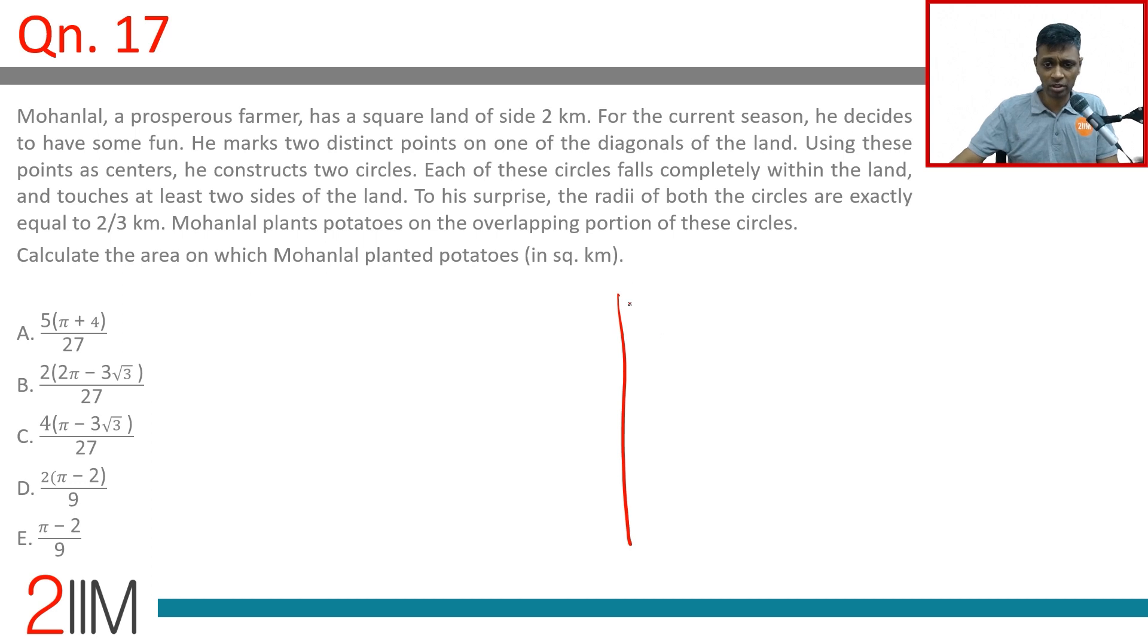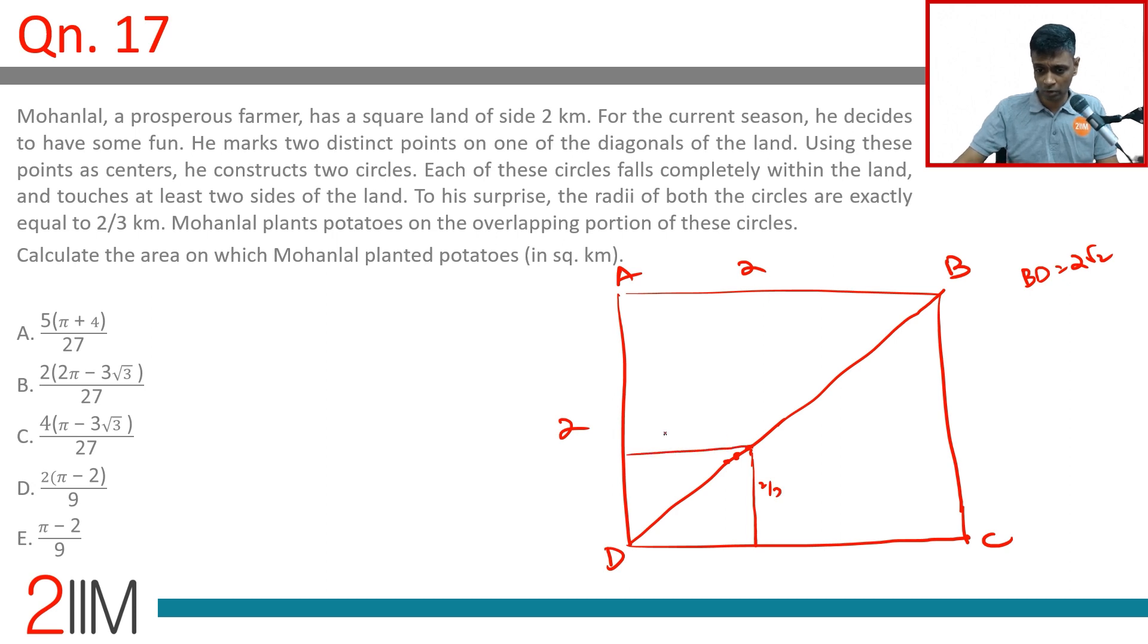Lovely, lovely question. So let's draw the square. Square of side 2 kilometers. He marks two distinct points on one diagonal. The square is A, B, C, D. The diagonal BD is 2√2 kilometers. He constructs two circles. Each circle falls completely within the land and touches at least two sides, exactly two-thirds of a kilometer. So, some center somewhere here, this is 2/3. This is 2/3. We are drawing a circle like this. Likewise, from somewhere here, this is 2/3, this is 2/3. We are drawing a circle like this.